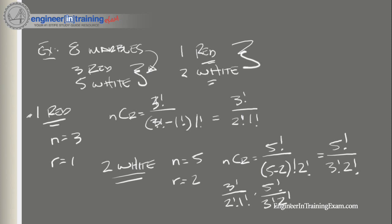We can simplify using a calculator or by hand, reducing each term: 3 over 1 multiplied by 5 times 4 divided by 2 times 1, which equals 30. So out of the 56 possible draws we determined earlier, 30 of those would contain one red and two white marbles.